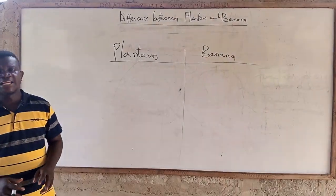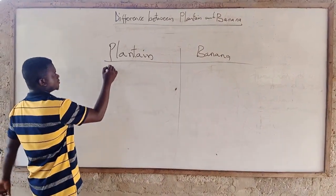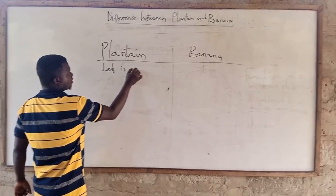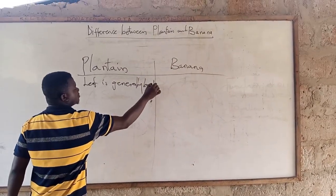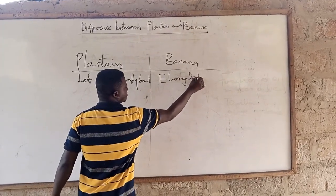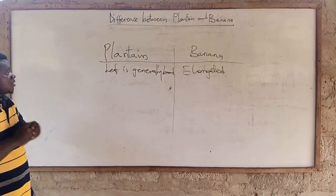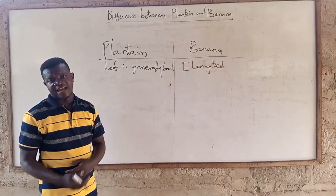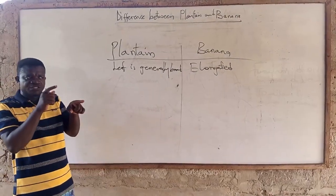Starting from the leaves: the leaves of plantains are generally broad, whereas the leaf of banana is elongated. If you take the leaf of plantain it is generally broad, but if you take that of banana it is elongated — quite pointed at the tip. After this class we will take you to the field to show you the differences.